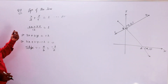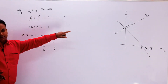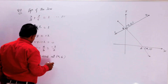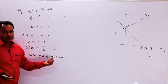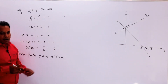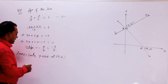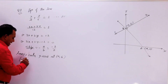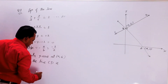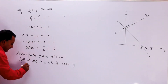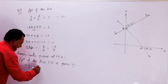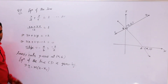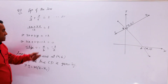अब आपको point पता है। एक बात और लिख देते हैं बच्चों कि line first cuts y-axis at (0,6)। आपको equation of line CD पता करनी है। जैसा कि मैं आपको बता चुका हूँ कि हम यहाँ point-slope form यूज़ करेंगे। Equation of line CD is given by: y - y1 = m(x - x1)। यह formula यूज़ करेंगे बच्चों। उससे पहले हम CD की slope पता कर लें।